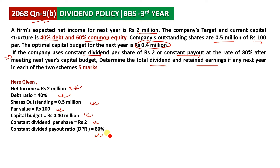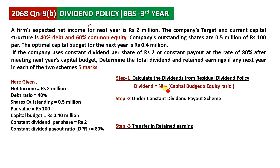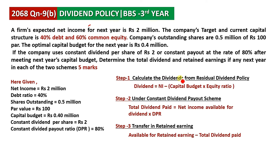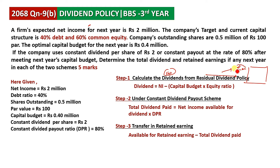We have a formula for this step. In the first step, we calculate the amount available for dividends under the residual dividend policy — that is, earnings available after funding the equity portion of the capital budget.